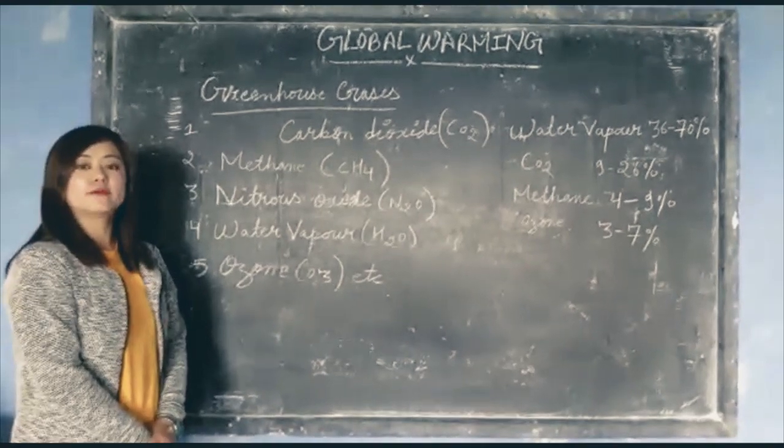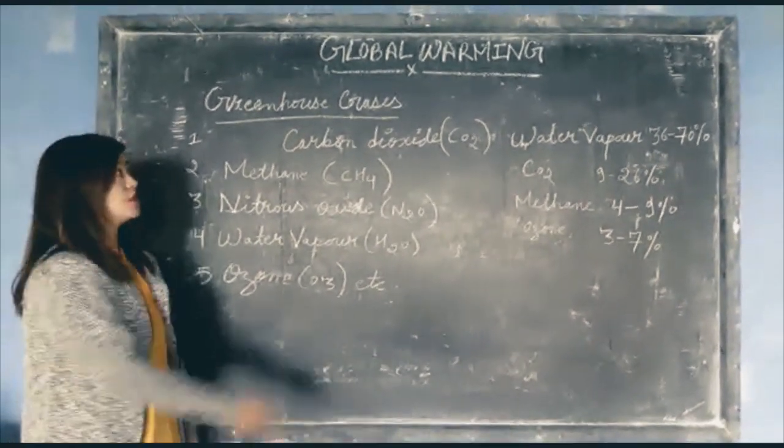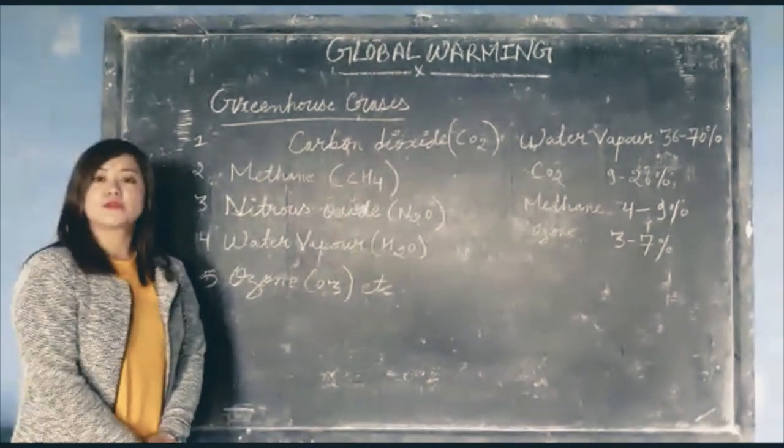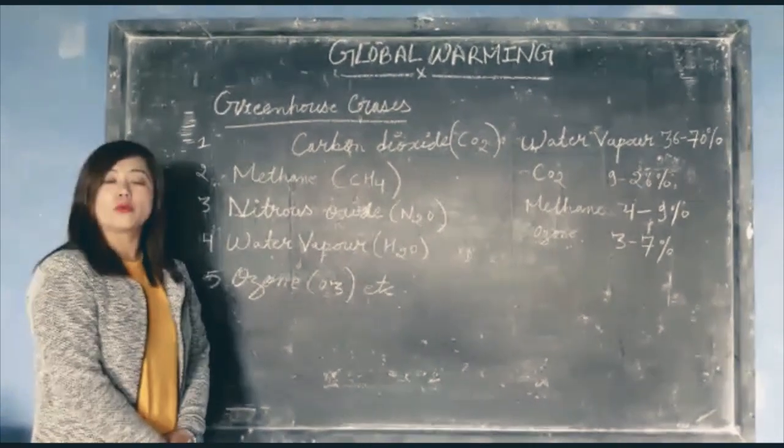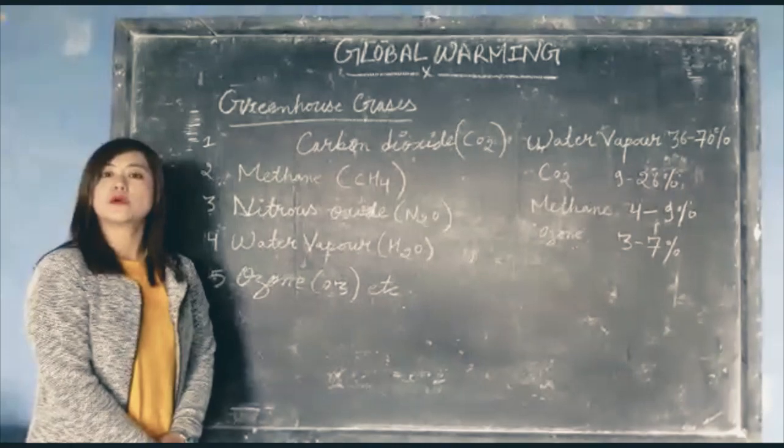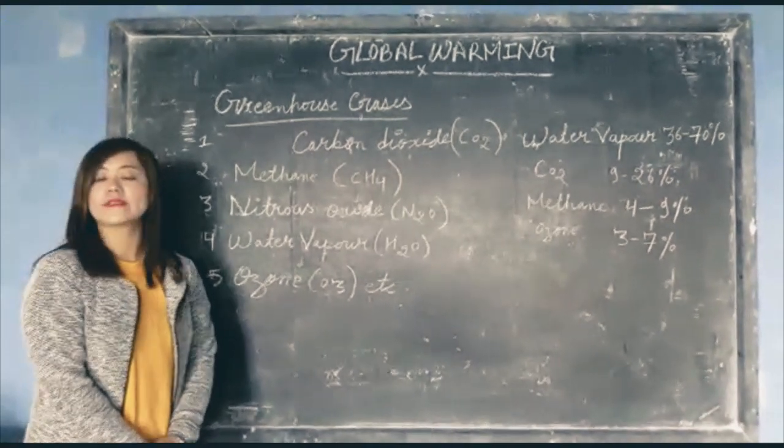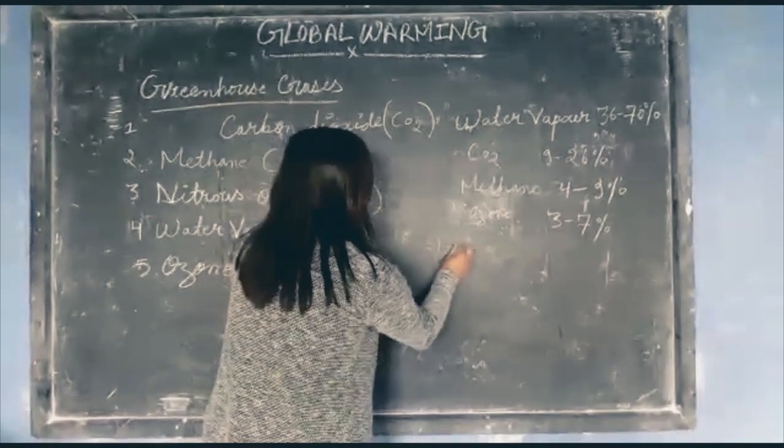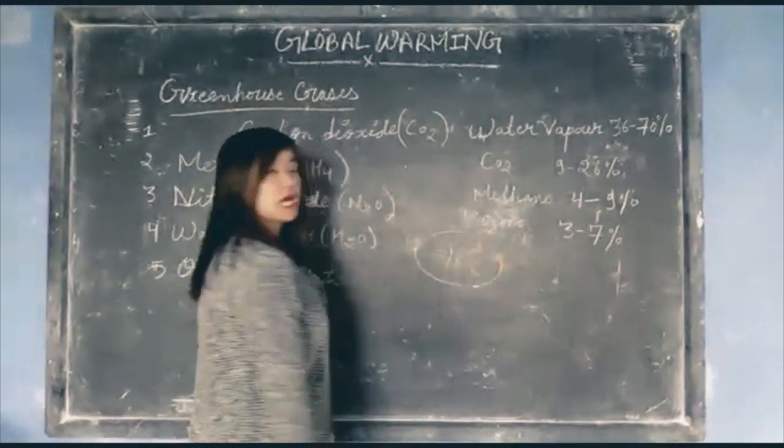Good afternoon everyone, I am Rajmi Garai. Now I am teaching about global warming. As we know, the sun is the main source of heat and energy to our earth. Without the sun, our earth would have been really very cold, and the average temperature would have been minus 18 degrees Celsius.